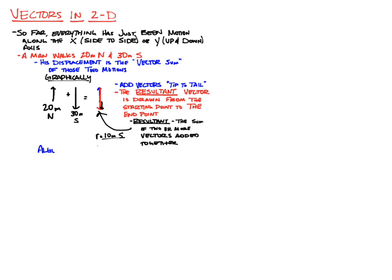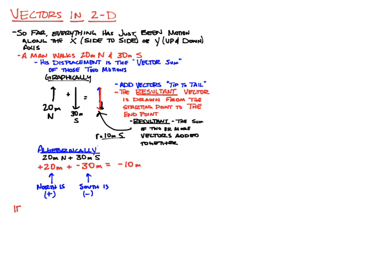We can also do this algebraically without using the picture. To solve algebraically, we take 20 meters north and add 30 meters south, but one's north and one's south, so one's positive and one's negative: positive 20 meters plus negative 30 meters. Along a straight line, positive is one direction and negative is the opposite. Our resultant is negative 10 meters, which is just 10 meters south. North is positive, south is negative, and since our resultant is negative, it's 10 meters south.